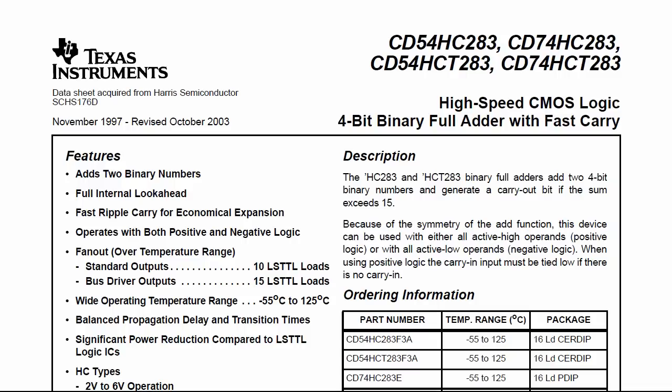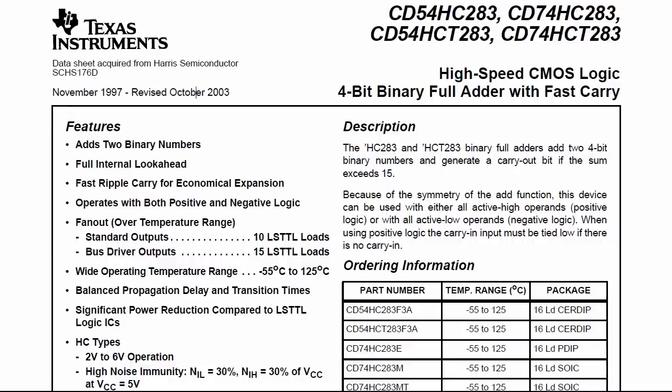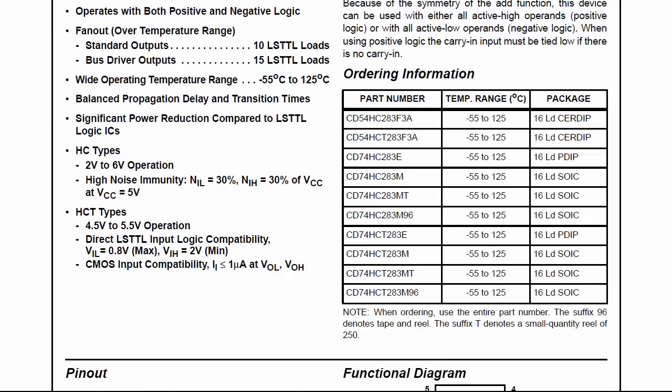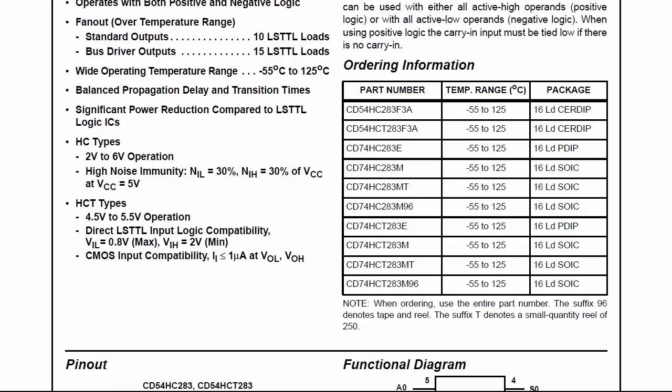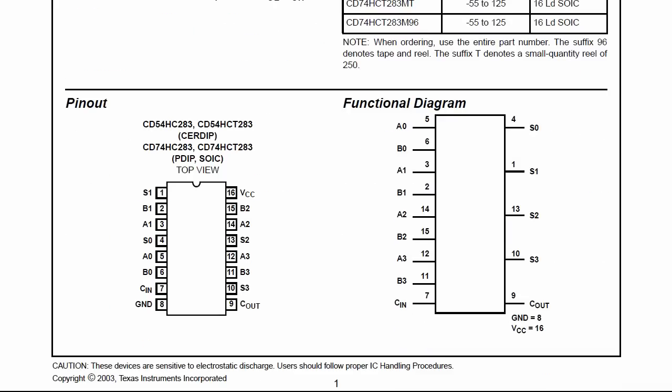There isn't too much else very important to note in the datasheet over what we've discussed already. You can see that there is a carry out triggered if the sum is greater than 15. It can be used for positive logic or negative logic operands. The CD74HC283E is the version that I'm using, and you can see that it's a PDIP package, so it will sit neatly in our breadboard.